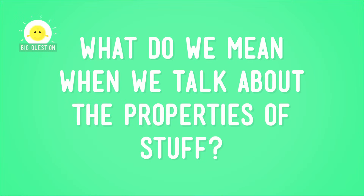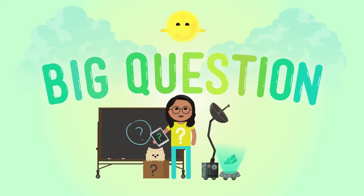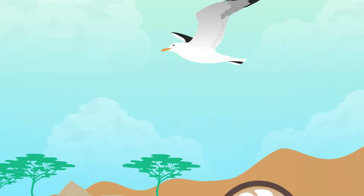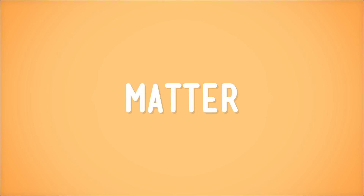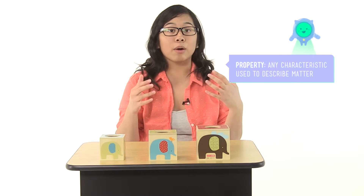But what do we mean when we talk about the properties of stuff? Well, let's start with this. The stuff that makes up everything is called matter. It doesn't make any difference if it's a tiny grain of sand or all of the air that surrounds the Earth — everything is made of matter. And a property of matter is just any characteristic that we can list about it, like how it looks, feels, or acts.